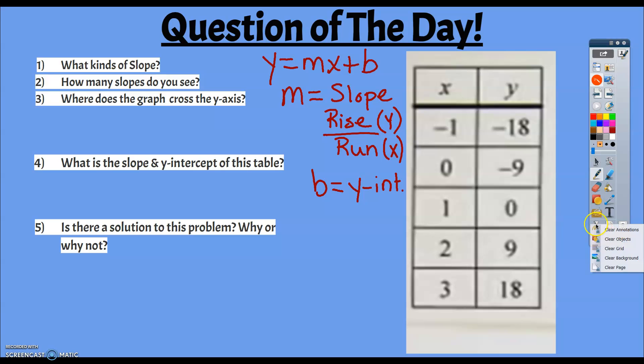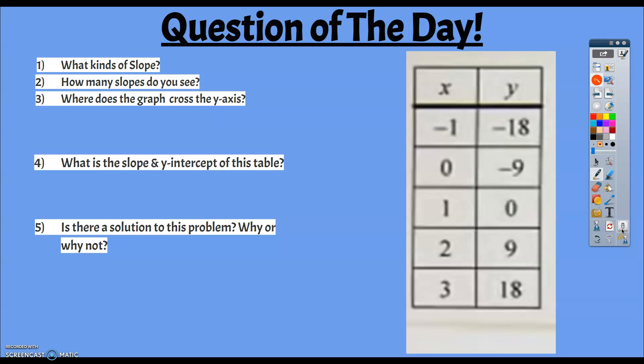So let's take a look at our table. So we have to find a pattern or a sequence. So we'll start out with purple, and if we look at x, we go from negative 1 to 0, and you know that we're adding 1. And if we go from 0 to 1, we know that we're adding 1. If we go from 1 to 2, we're adding 1. If we go to 2 to 3, we're adding 1. That's a constant change, or that's a constant sequence.